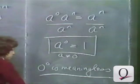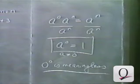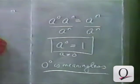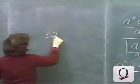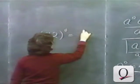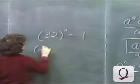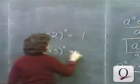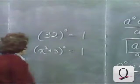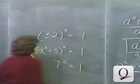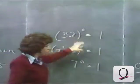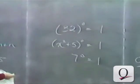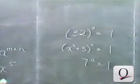As long as a is not 0, a to the 0 power is equal to 1. Zero to the 0 power doesn't make any sense. For example: 32 to the 0 power is equal to 1; x squared plus 5, the whole quantity to the 0 power, equals 1; 7 to the 0 power equals 1. Any non-zero number or quantity raised to the 0 power is equal to 1.